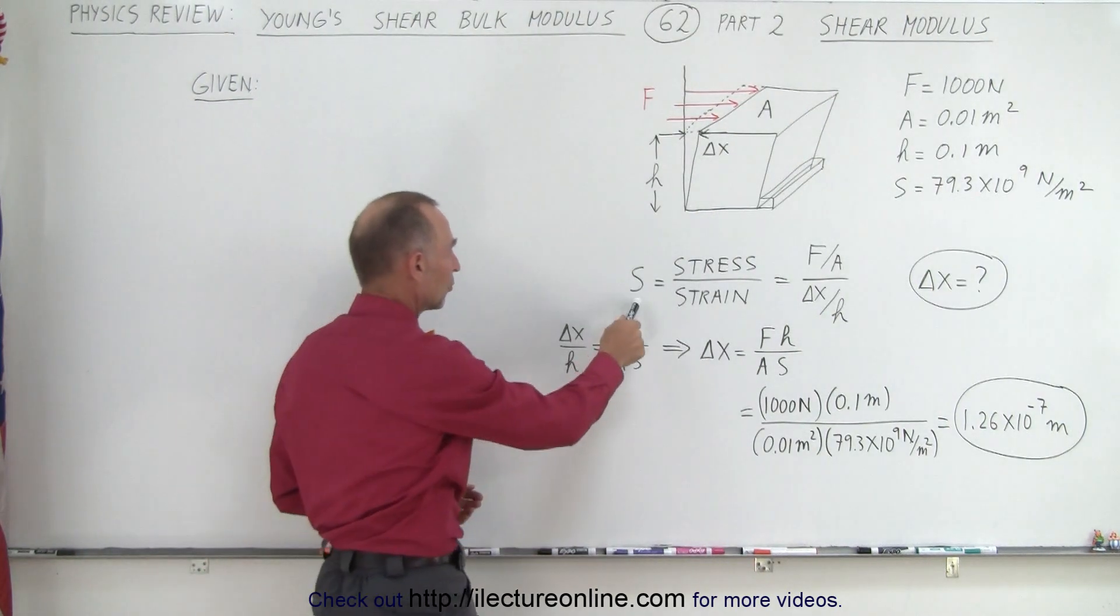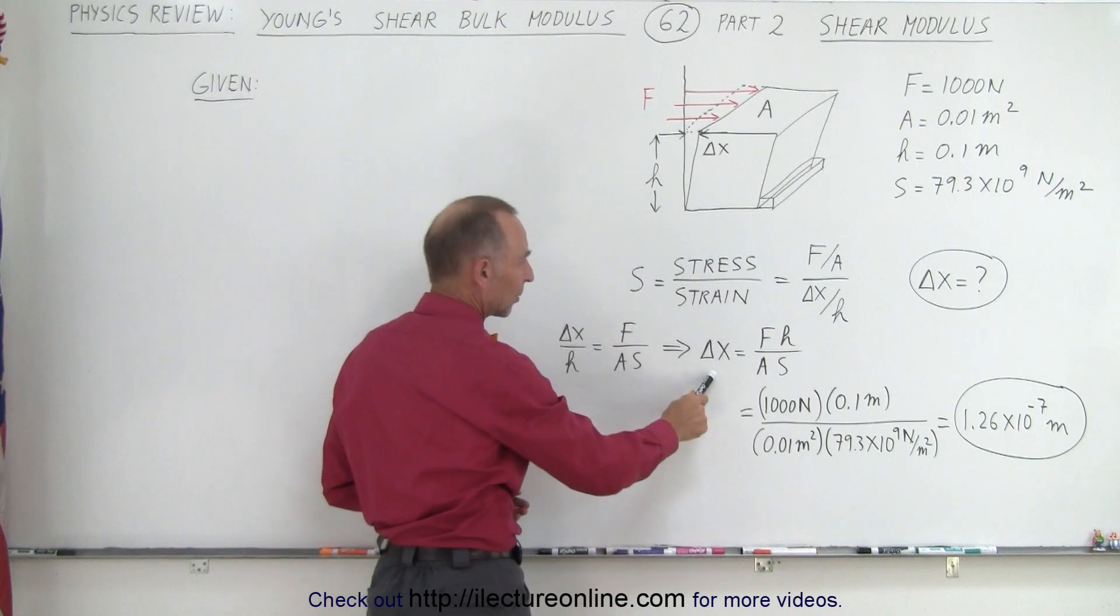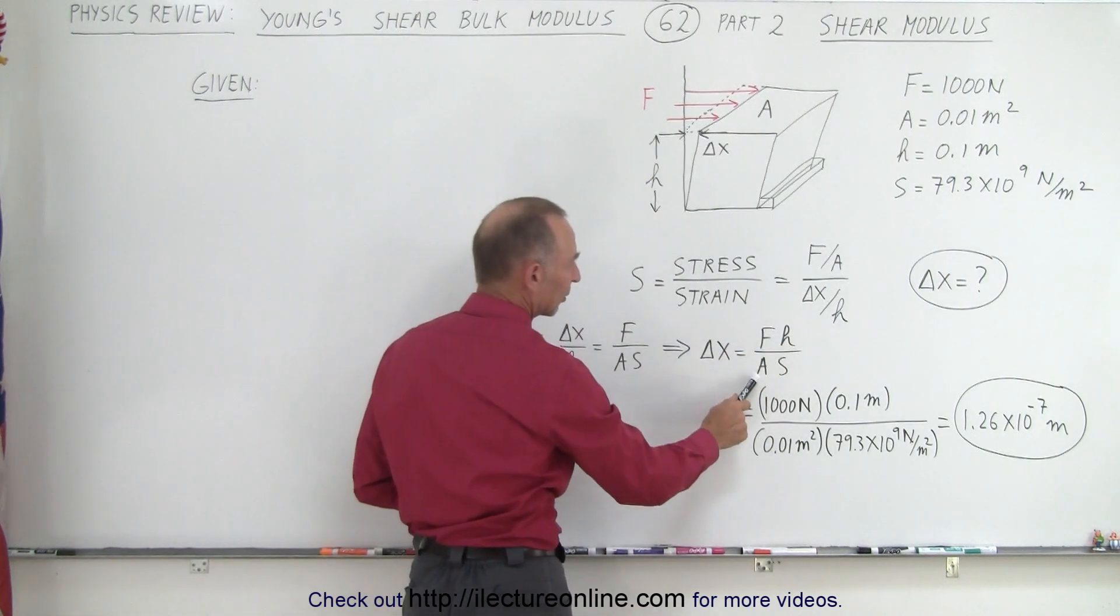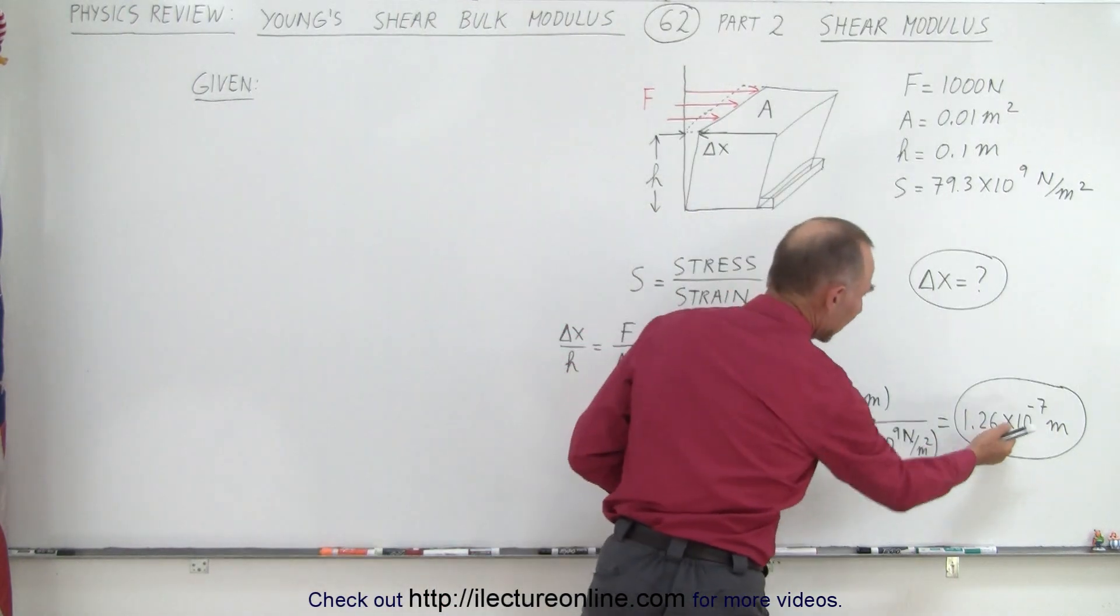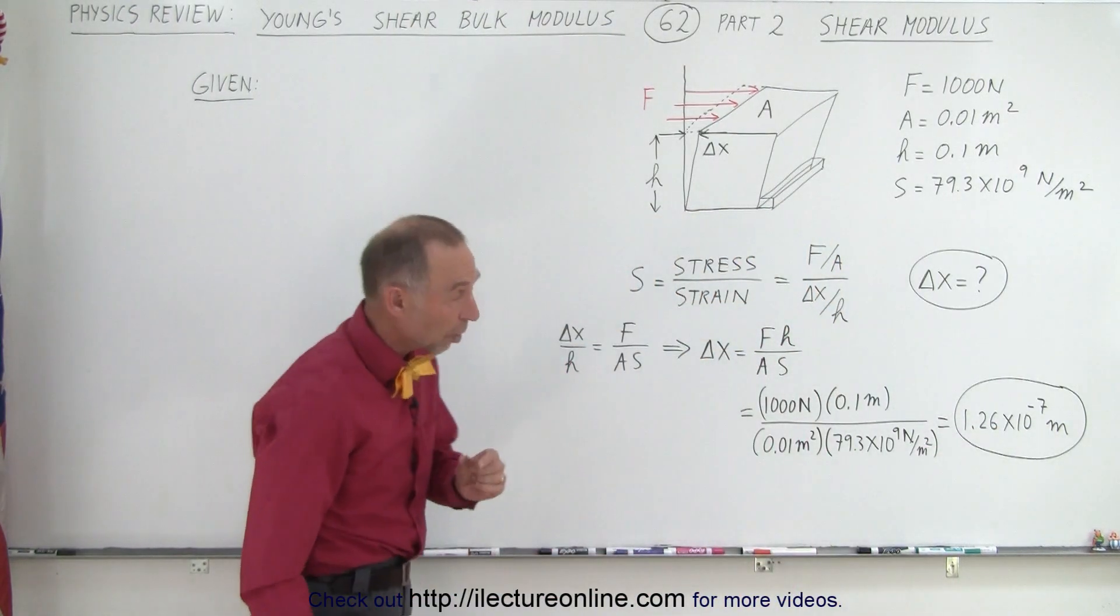And then we solve this equation for delta x. So delta x becomes the force times the height divided by the cross-sectional area and the shear modulus. When you plug in the numbers, here again you can see the deformation is very small.